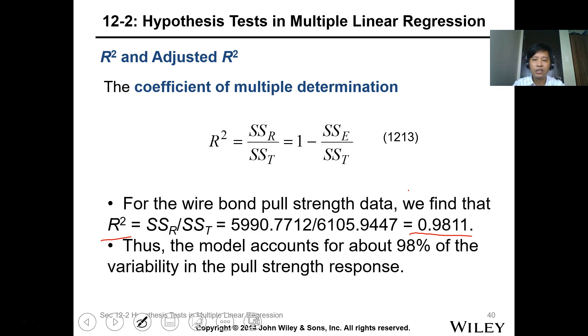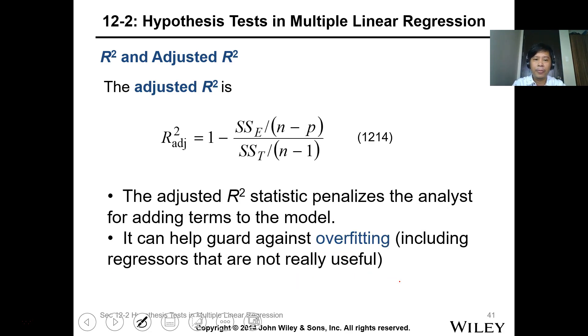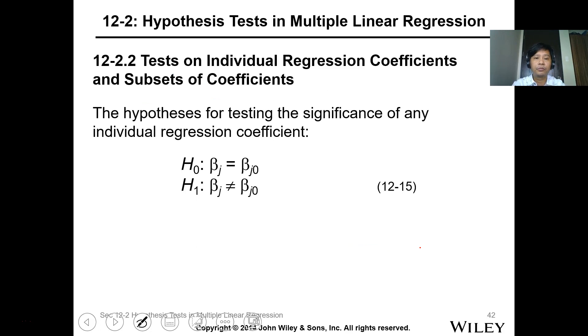You can see here, what does this mean? The model accounts for about 98% of the variability in the pull strength response, meaning the regression model is good. The adjusted R-squared is also there in Excel, but you can use this formula to calculate it. It's 1 minus SSE over SST with adjustment for degrees of freedom. It can help guard against overfitting by including regressors that are not really useful.